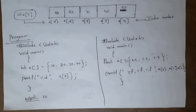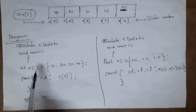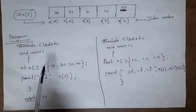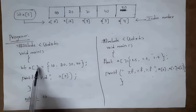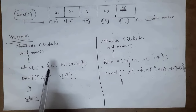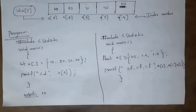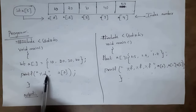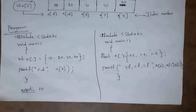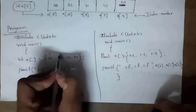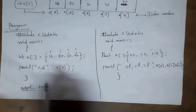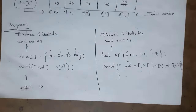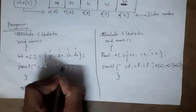This is a simple program to access elements in an array. I declared: int a[] = {10, 20, 30, 40}. To print an element, I write: printf("%d", a[0]). The format specifier %d is for integers. a[0] means the value at index 0 will be printed as output, which is 10. If I write a[1], then the value at index 1, which is 20, will be printed.